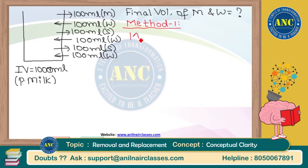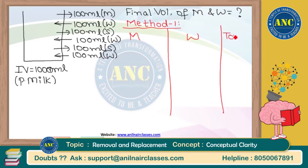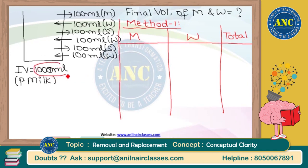There are two parameters: milk and water, and the last column is total volume present. Initially, 1000 ml of milk is present and no water is present, so total volume is 1000 ml.